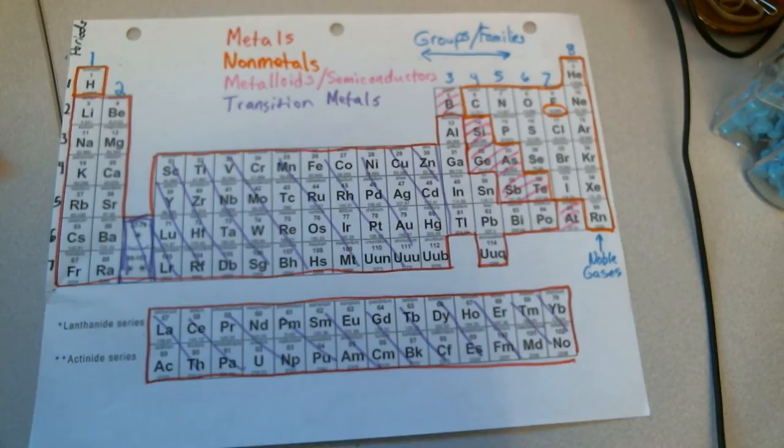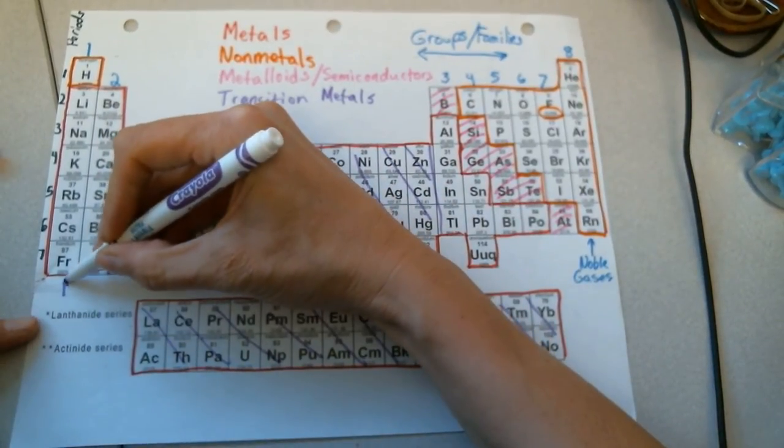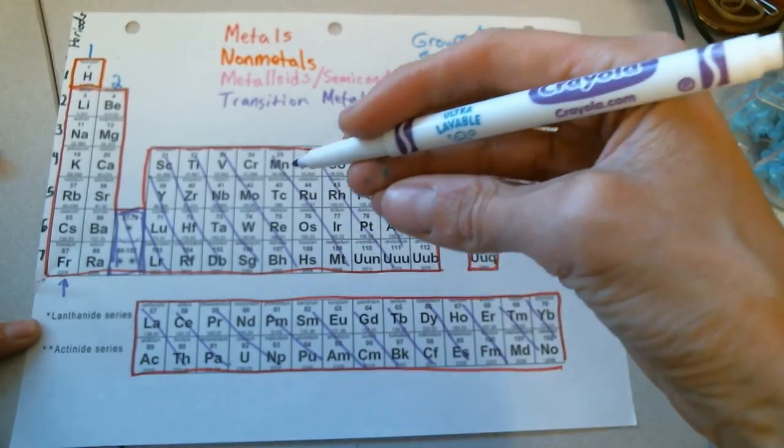The second group I would like you to mark are the alkali metals. The alkali metals are group 1. And the group 1 elements are very reactive. They don't like to be unbonded. So one example is sodium. And sodium is known to explode in water. So we're going to call these ones here the alkali metals.